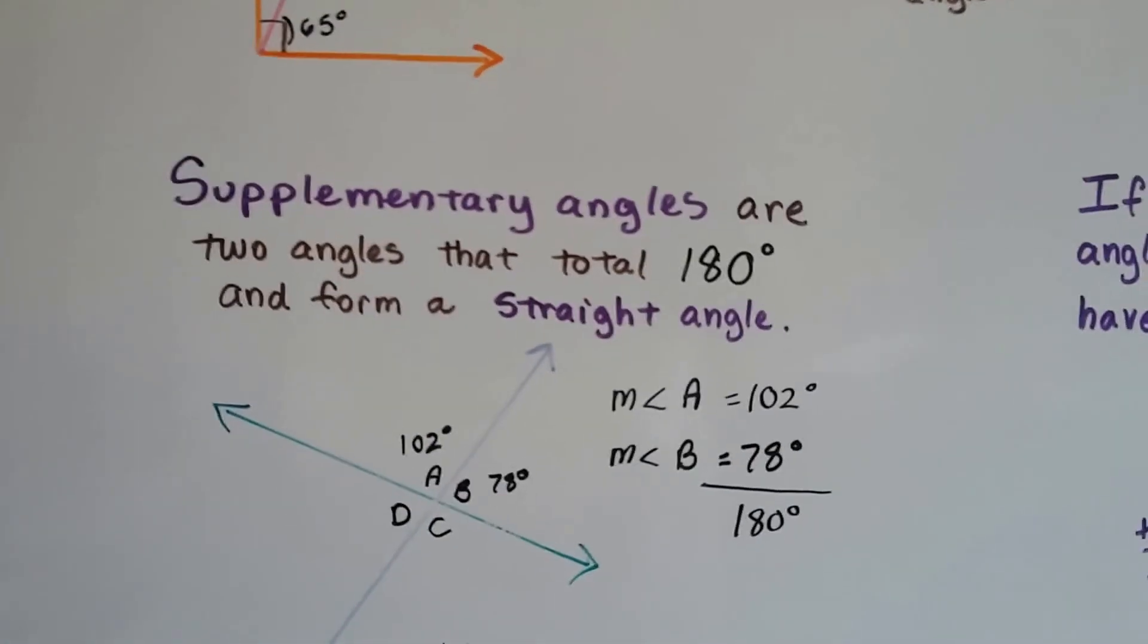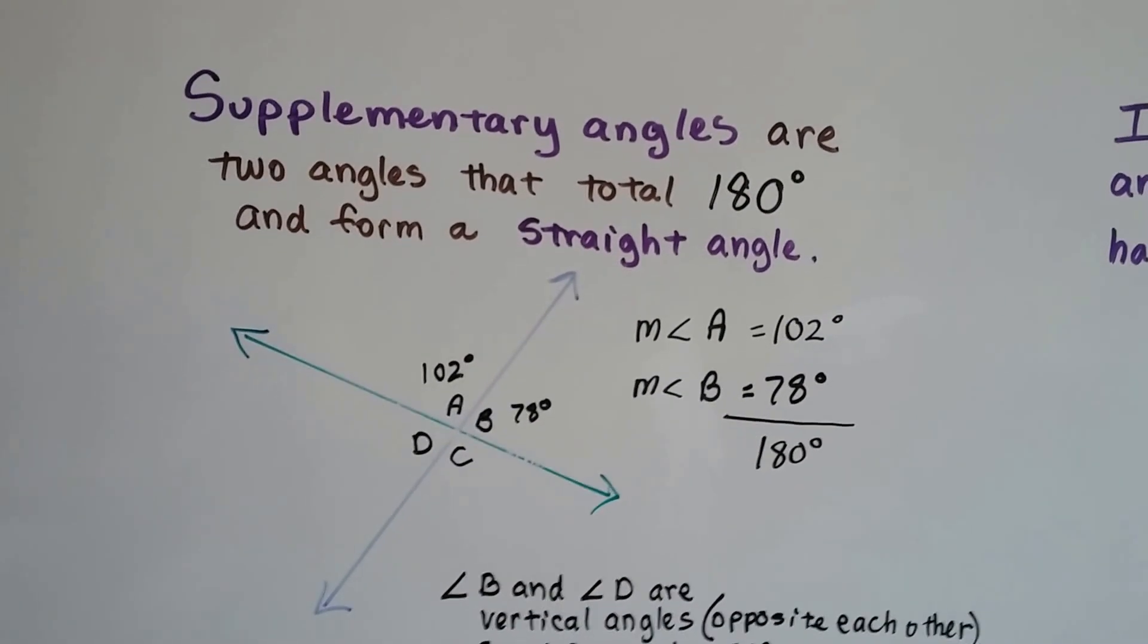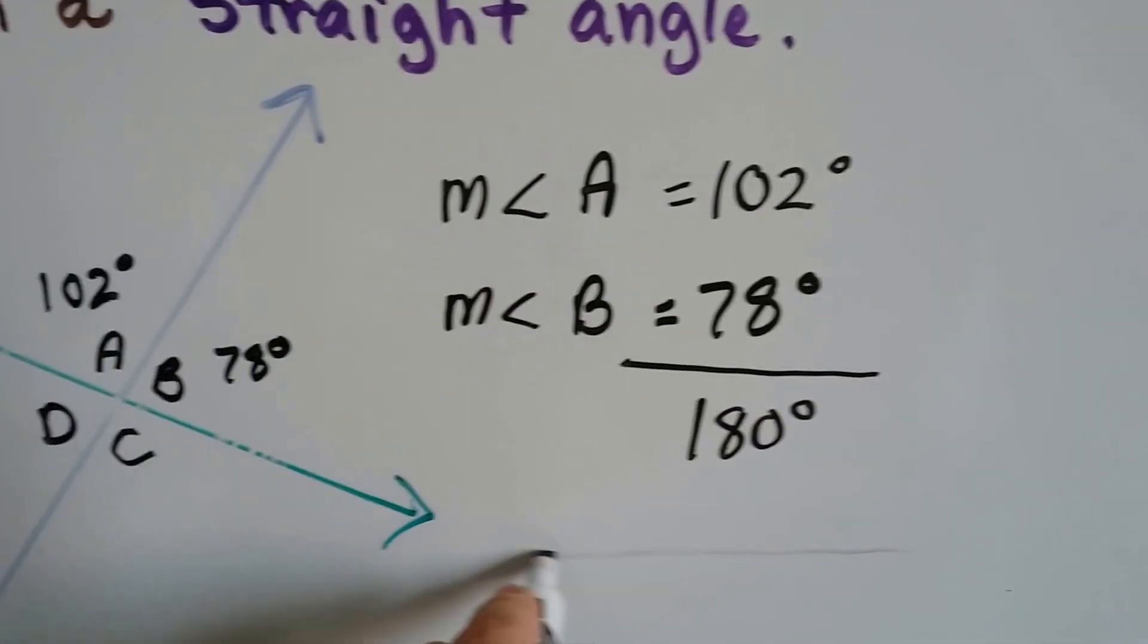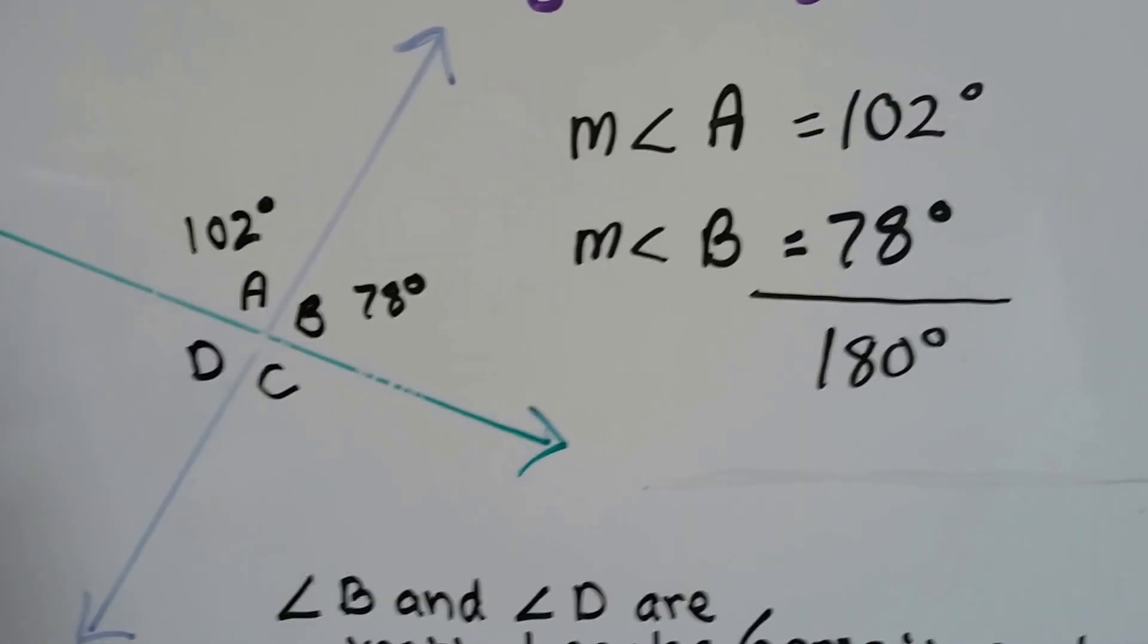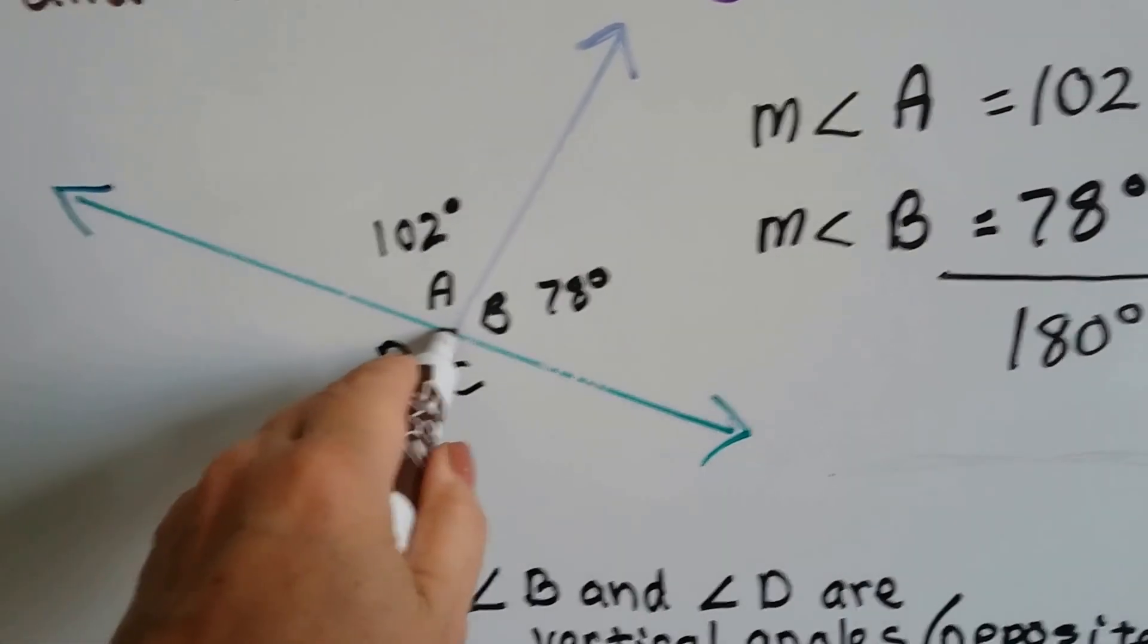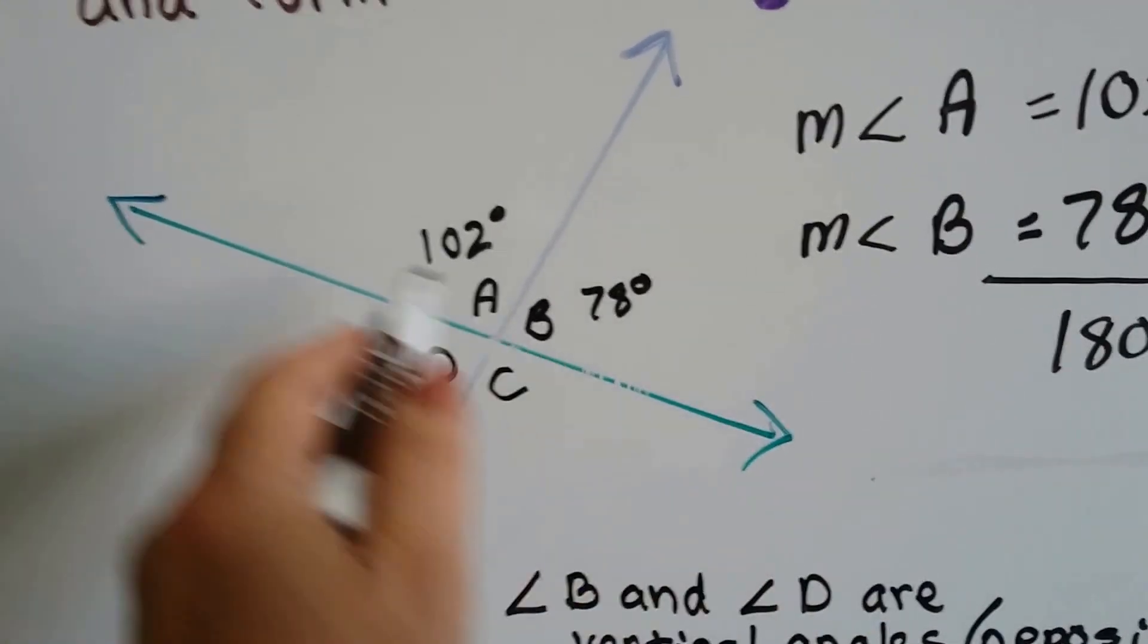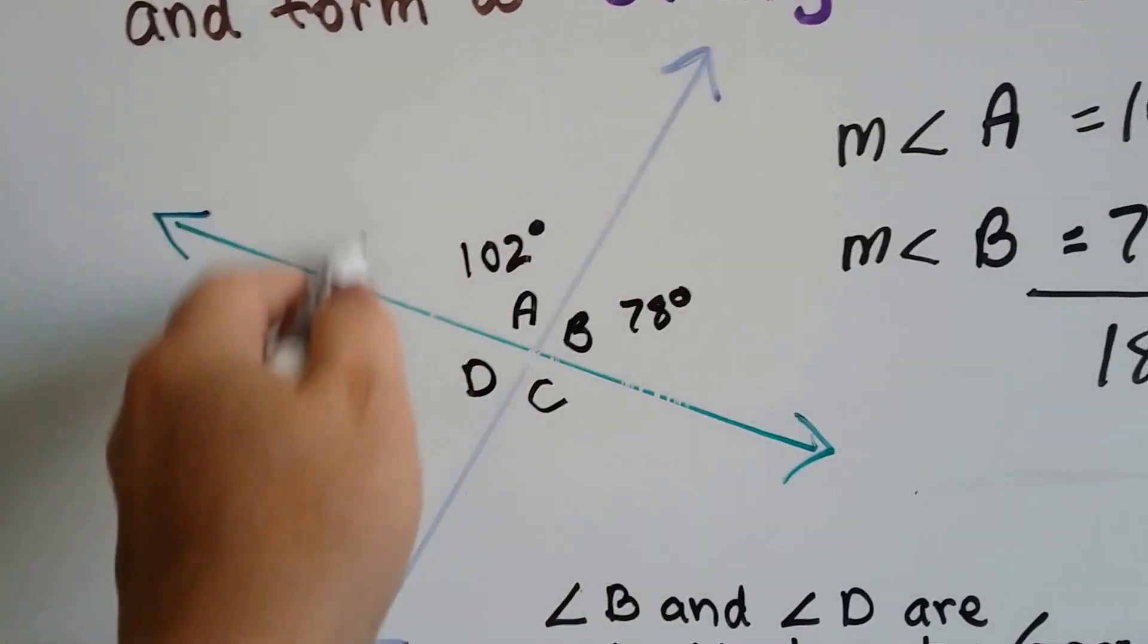Supplementary angles are two angles that total 180 degrees, and they form a straight angle. A straight angle is actually a line going straight across, like this green line here, and the vertex is actually this point right here. And it doesn't look like an angle, it looks like a straight line, but if you were to measure this entire arc here, it would be 180 degrees.